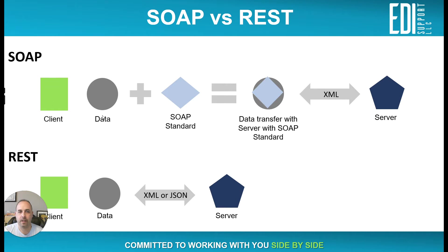You're the client, if you think of it that way. With SOAP, you put the data and the SOAP standard together and do the actual transform of data in XML to a server. With REST, the client sends data as XML or JSON to a server. They're going to indicate how they'll allow you to make your API connection — either via SOAP or REST. With SOAP you have to use XML; if it's REST, you can use XML or JSON.